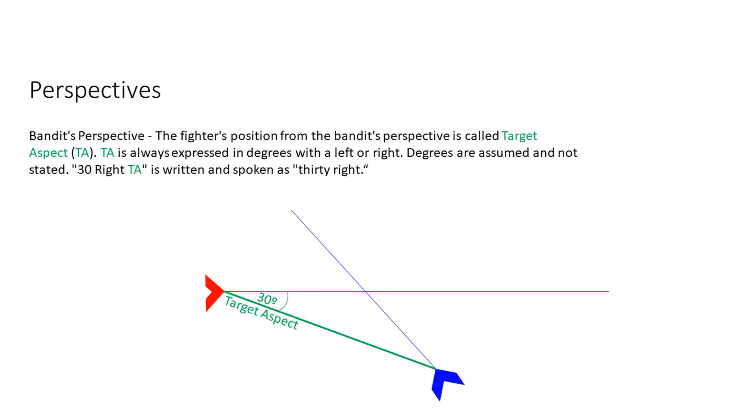Next up we have the perspective of the bandit, and that's the fighter's position from the bandit's perspective. It's called target aspect or TA. TA is always expressed in degrees with a left or right. Degrees are assumed and not stated. So if they were 30 degrees right, it would be written and spoken as just 30 right. So again, this is just the angle off the bandit's nose to our position or the friendly aircraft's position.